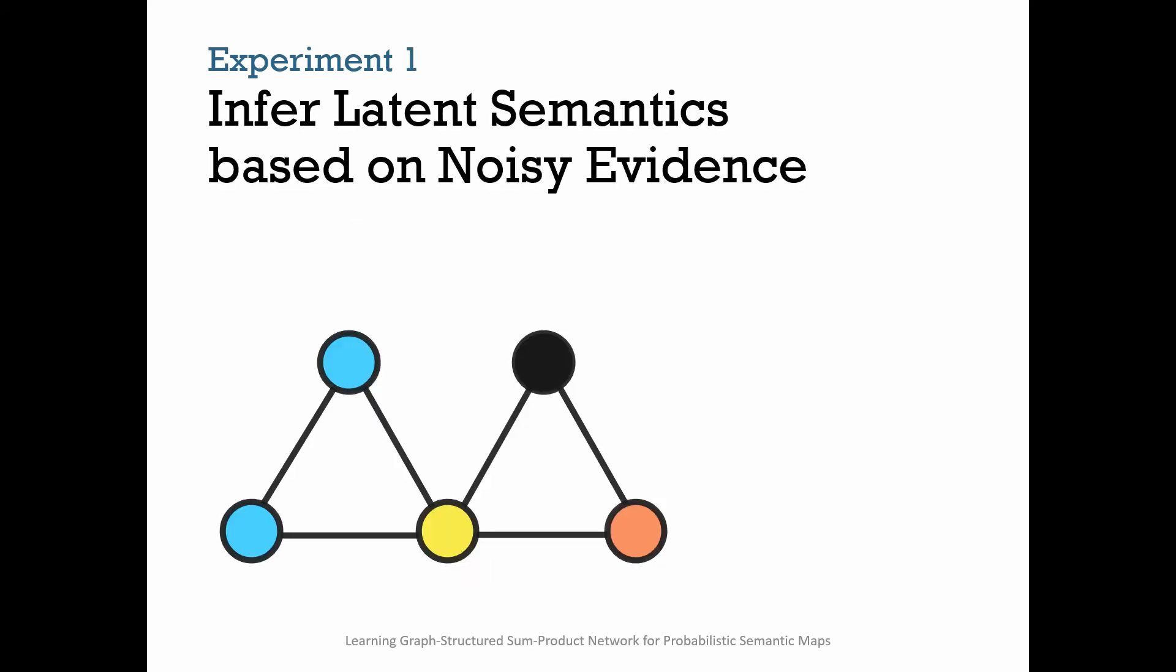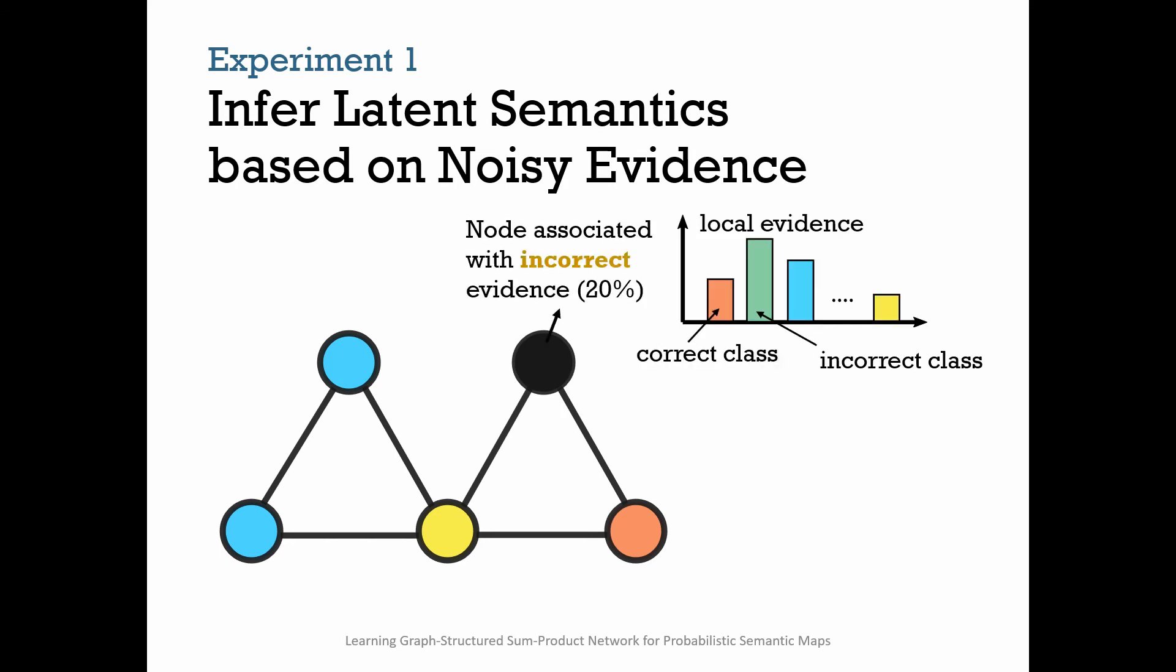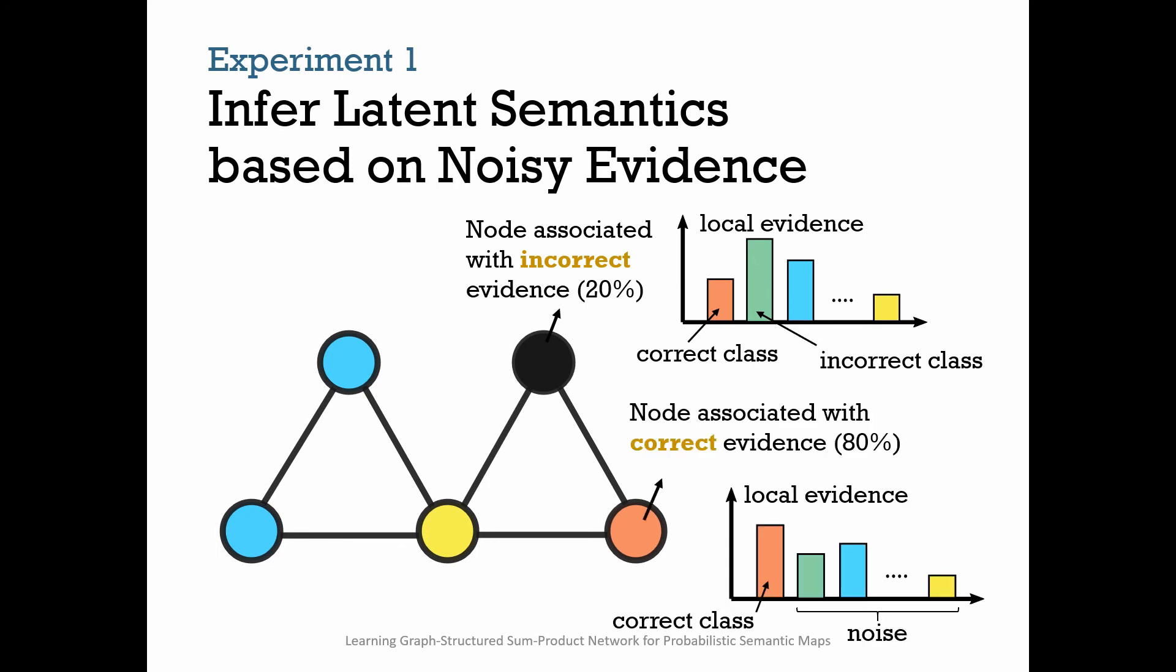In our first experiment, the task is to infer correct semantic information based on noisy local evidence. We introduce two types of noise. First, we randomly select 20% of nodes and associate it with incorrect evidence. In other words, the evidence will point to incorrect place class. Then, the remaining 80% nodes are associated with evidence pointing towards the correct class, but the evidence can be very noisy.